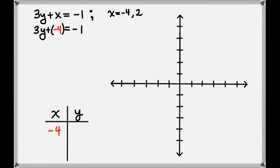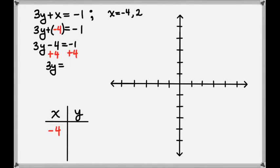We can rewrite this as 3y minus 4 equals negative 1. By adding 4 to both sides, we'll get rid of the negative 4, and we'll get 3y equals negative 1 plus 4, which is 3. Now we can divide both sides by 3 to get y equals 1. So our y value corresponding to x equals negative 4 is 1.